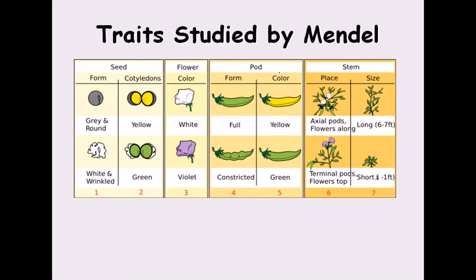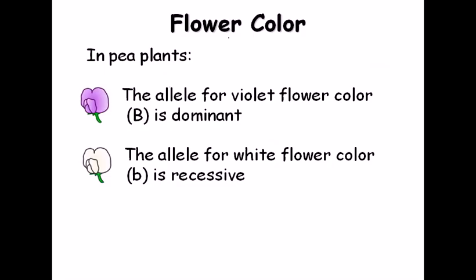According to Gregor Johann Mendel, he studied many traits using the pea plant. He determined various characteristics like seed form, flower, pod, and stems. He also looked at different types of characteristics — some dominant, some recessive. For example, seed form could be round or wrinkled; cotyledons yellow or white; pod color constricted or full. Yellow is dominant, white is recessive; violet is dominant, white is recessive. These traits have different phenotypic expressions.